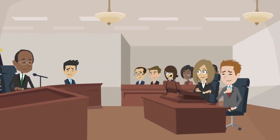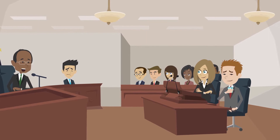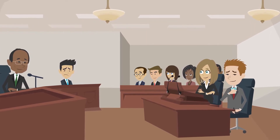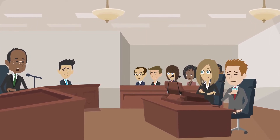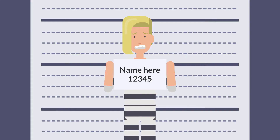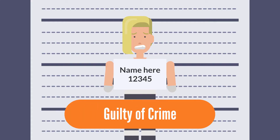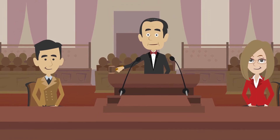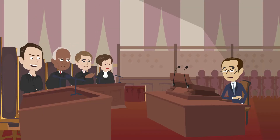If you, your friend, or your family member has been charged with a crime in Ontario's criminal justice system, you will most likely have thought about what might happen if you or your loved one is found guilty of that crime. There are more options available to the court than you are probably aware of. It is the role of your criminal defense lawyer to advocate for the lesser options if you are found guilty or if you choose to enter a guilty plea.